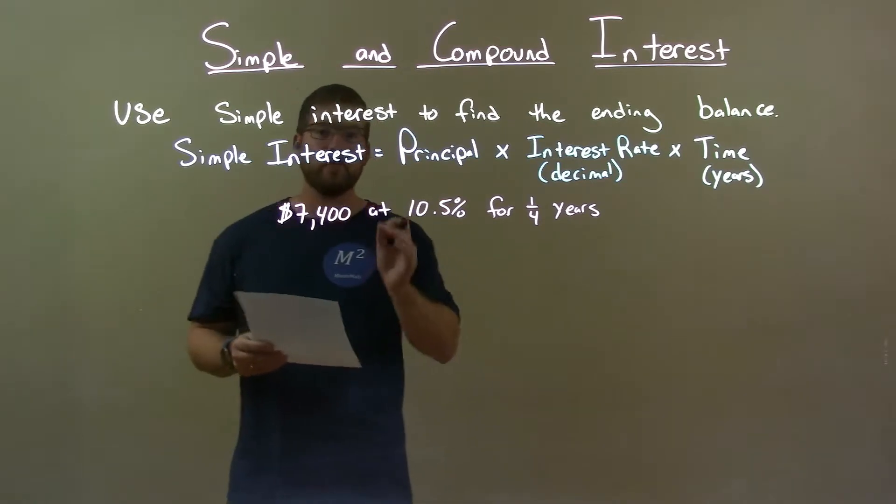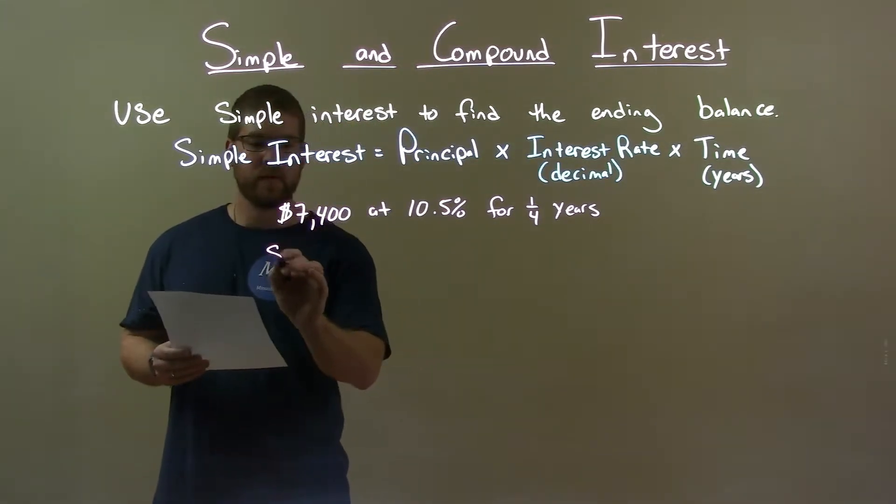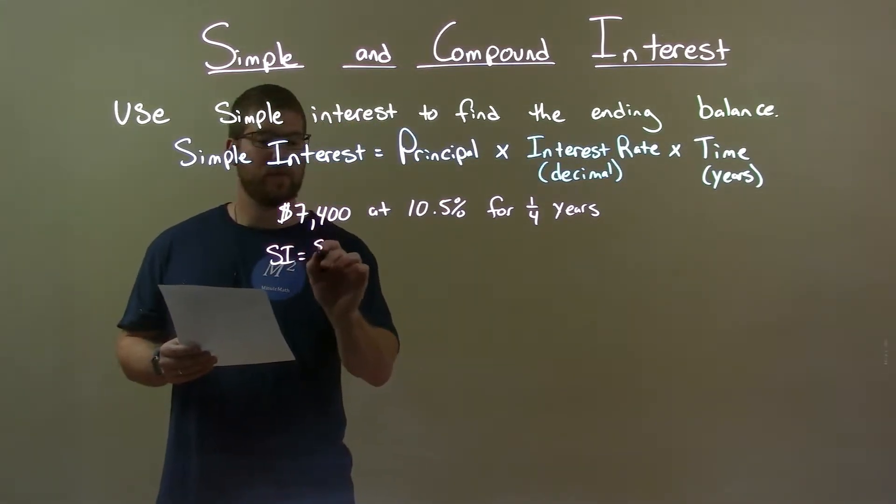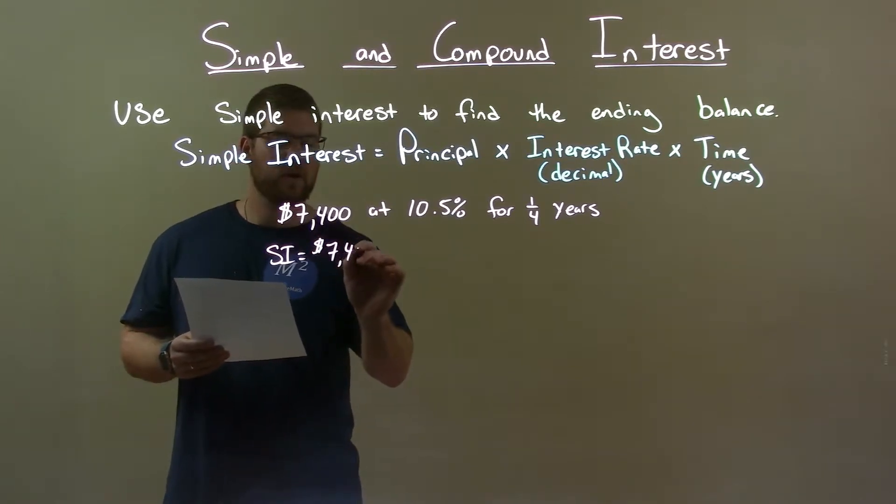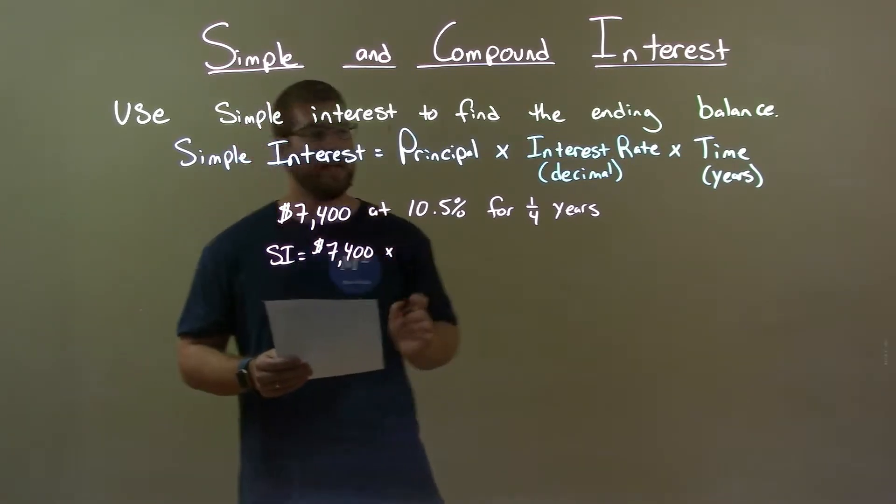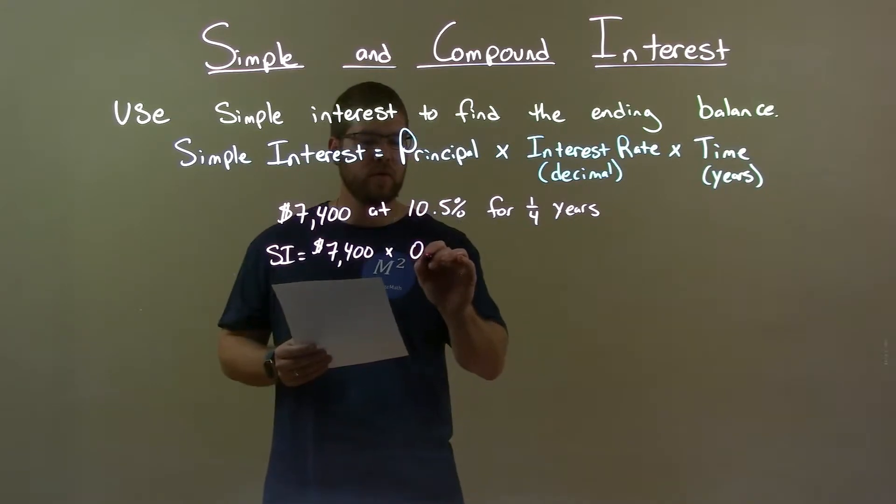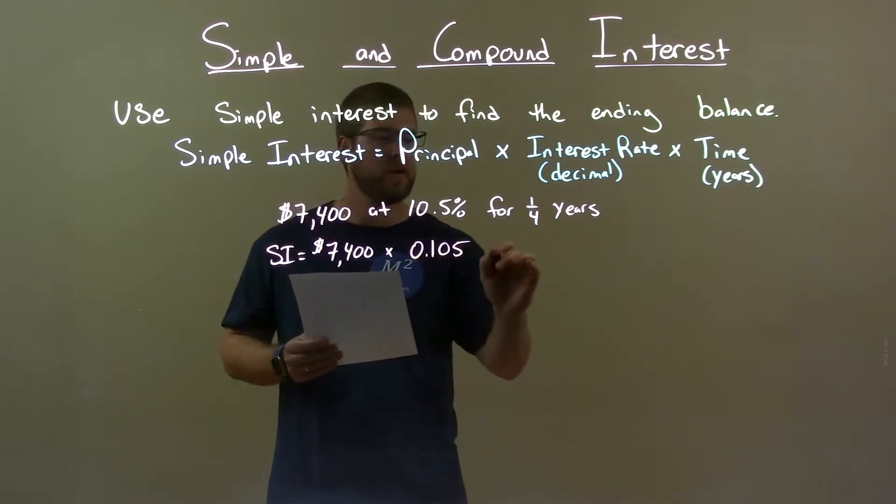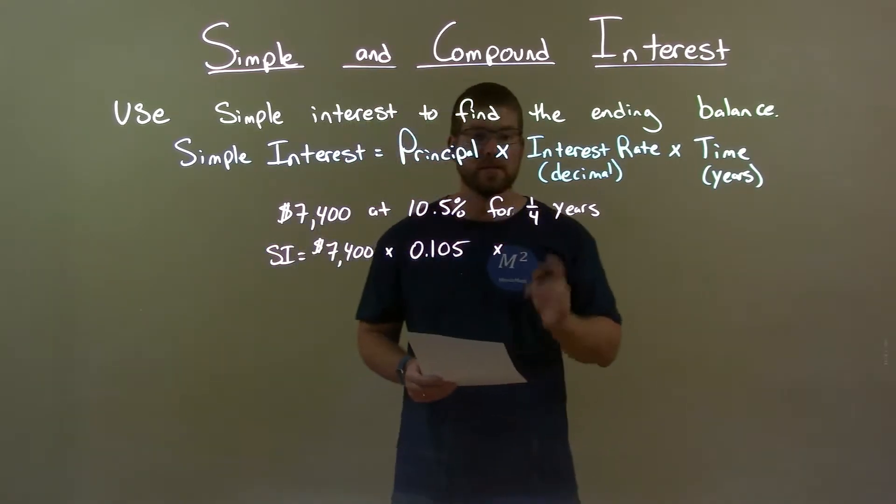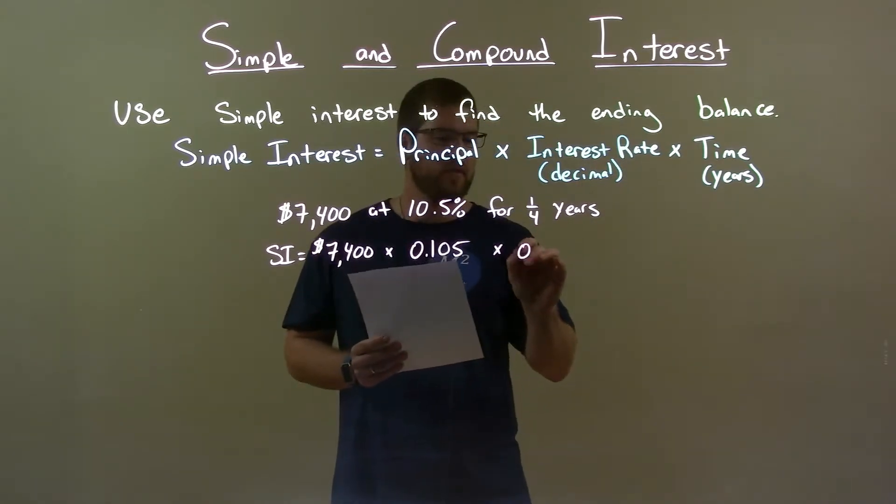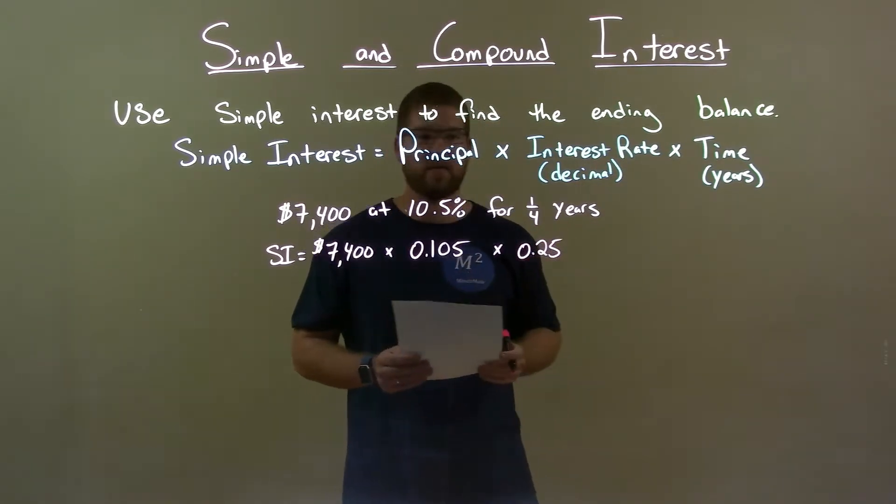First thing I want to do is use a simple interest formula. Simple interest is equal to my principal, $7,400, multiply that by my interest rate as a decimal, 0.105, multiply that by the number of years. That's our time, right? 1 fourth or 0.25, 1 fourth as a decimal.